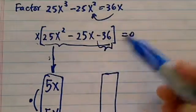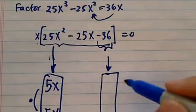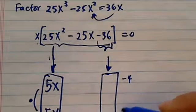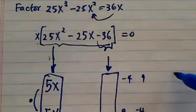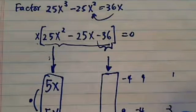I'm looking for a factor of minus 36. I could have minus 4 positive 9 or positive 9 minus 4 and so on and so forth. And I also can have 1 minus 36.